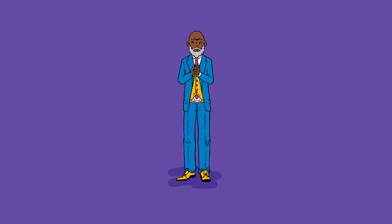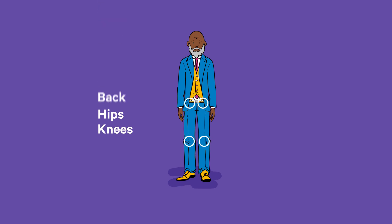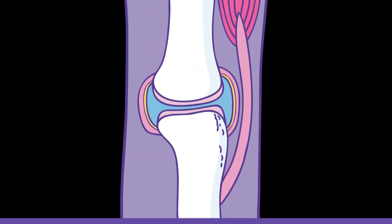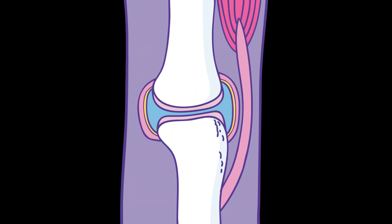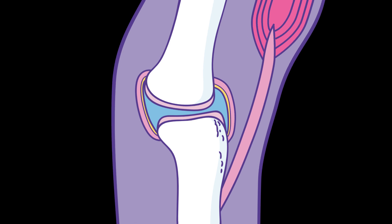It can cause pain and stiffness in joints. The most common joints to be affected are the knees, hips, back, feet, and hands. To understand what happens in osteoarthritis, let's first look at how a healthy joint works. A joint is where two or more bones meet.